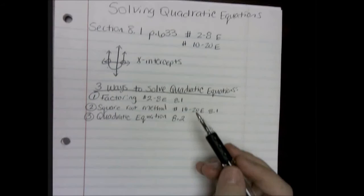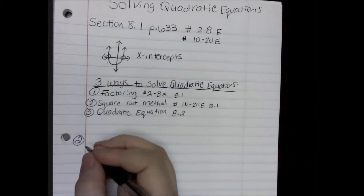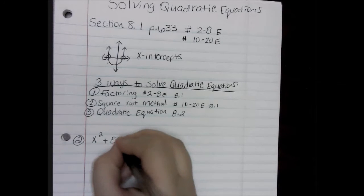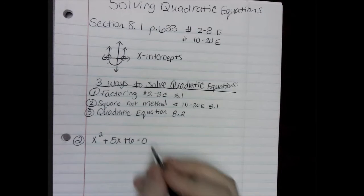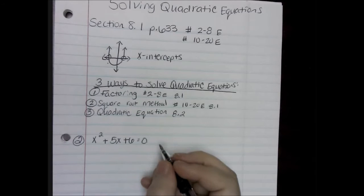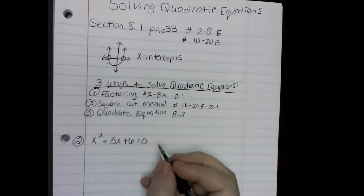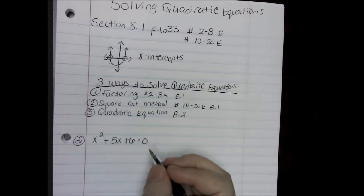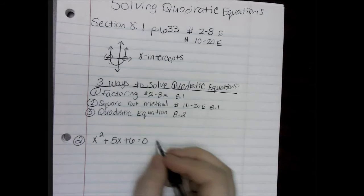To solve by factoring, let's look at number 2 in our book. Number 2 says x squared plus 5x plus 6 equals zero. One key point is to make sure that you always have your equation set equal to zero. If your equation is not set equal to zero, this will not give you an accurate answer. So please make sure that this always ends in a zero after the equal sign. First we have to factor, as long as we have it set equal to zero.